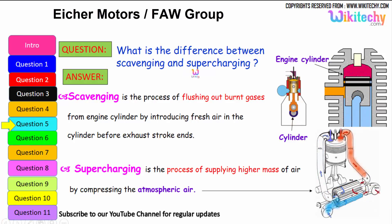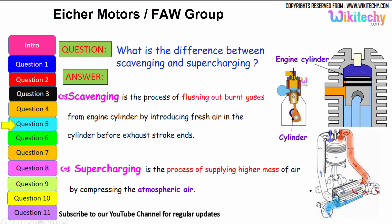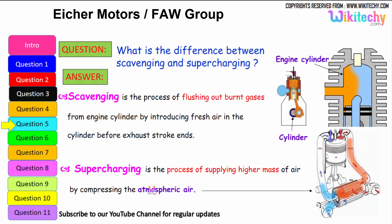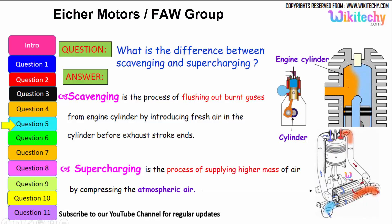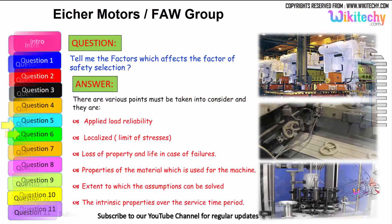What is the difference between scavenging and supercharging? Scavenging is the process of flushing out the burnt gases from the engine cylinder by introducing fresh air in the cylinder before the exhaust stroke ends. Supercharging is the process of supplying high-pressure air by compressing the atmospheric air — that is referred to as supercharging. You are able to see that high pressure air is injected into the cylinder to compress the atmospheric air.